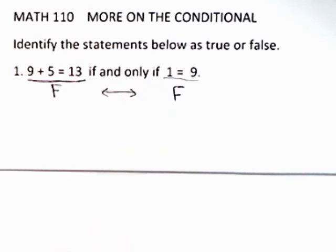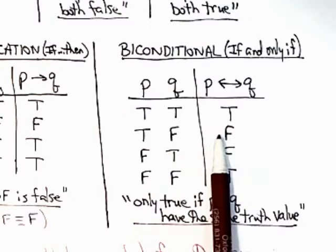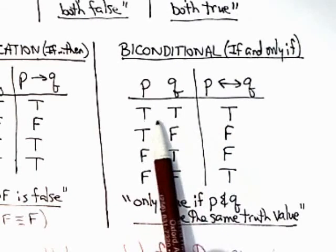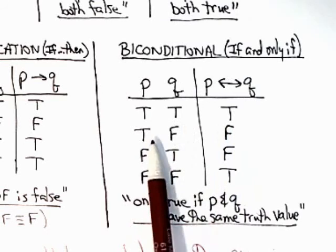The only thing left to do now is just remember what the biconditional truth table is. Remember you need to learn this. The biconditional is only true if the p and the q match. If they're both true it's true, and if they're both false it's true. If they don't match the biconditional is false.